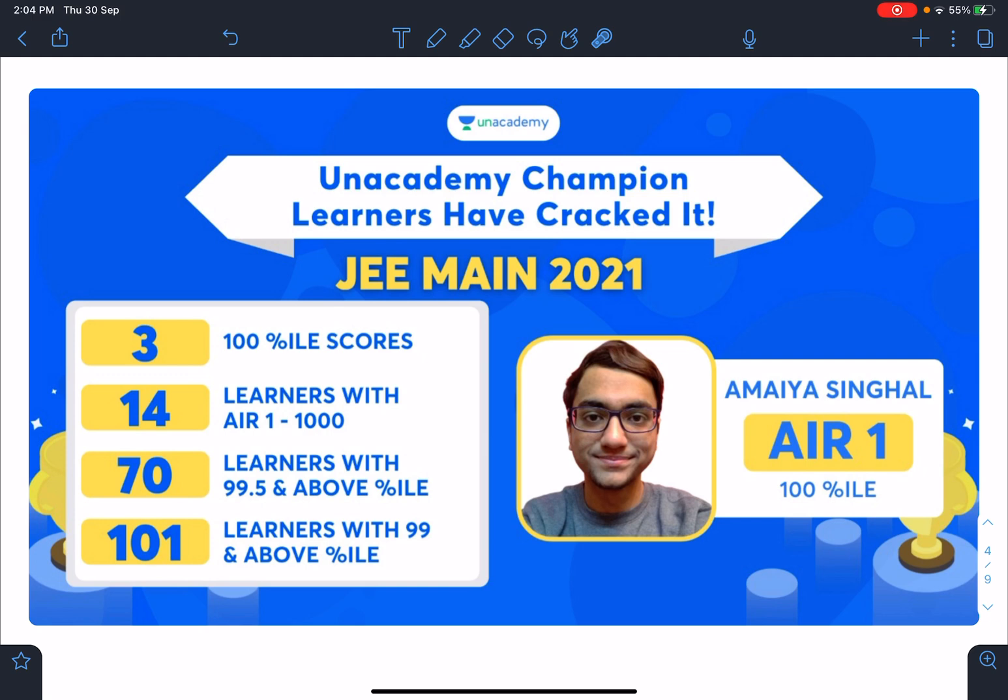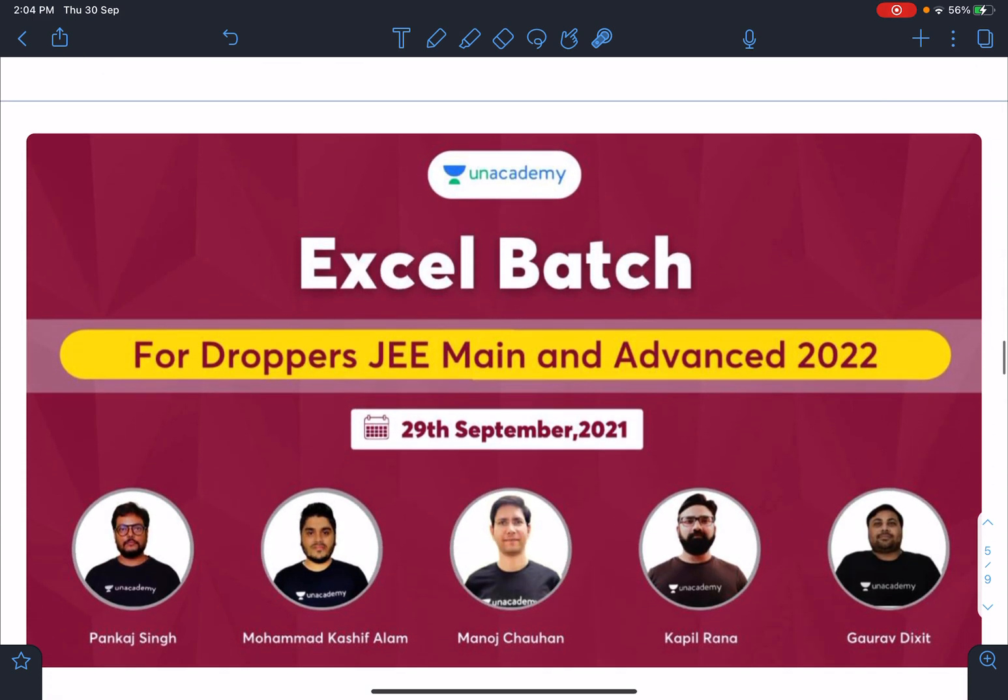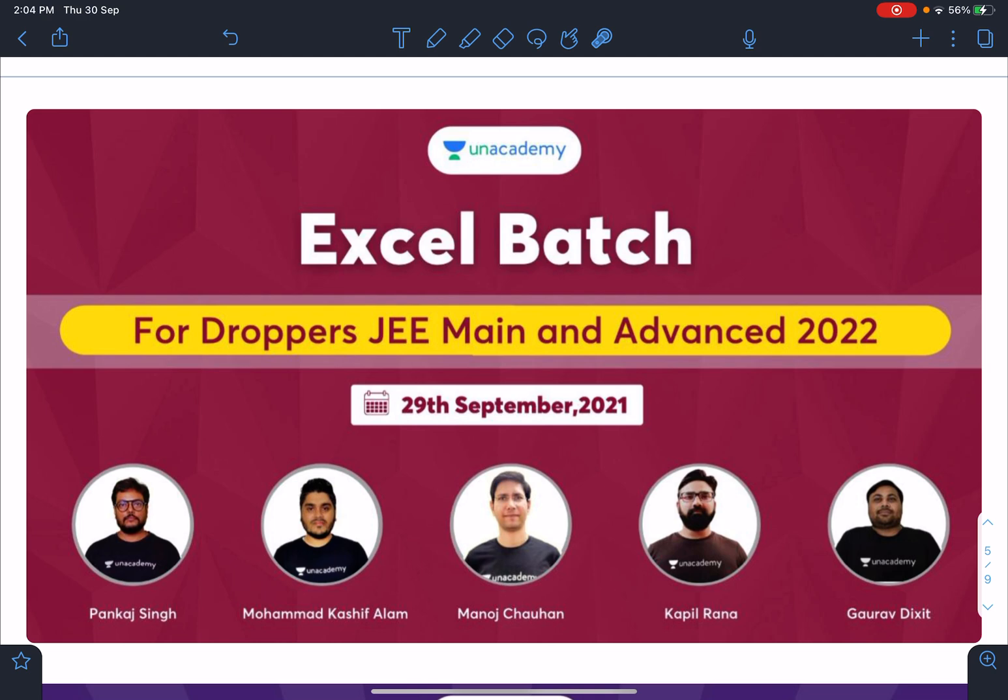And guys, Unacademy has got All India Rank 1 in JEE Mains 2021. It is Ameya Singh with 100 percentile. And I am very sure we are going to get a very great result in Advanced too.